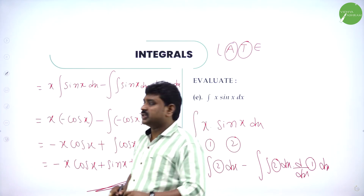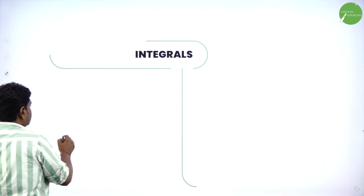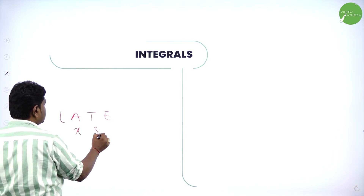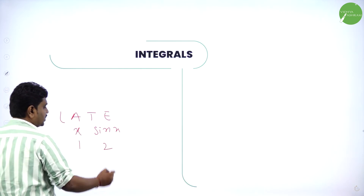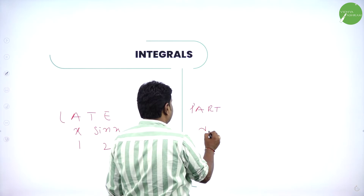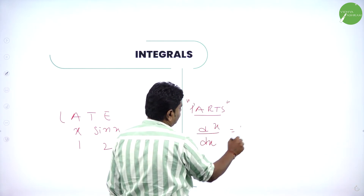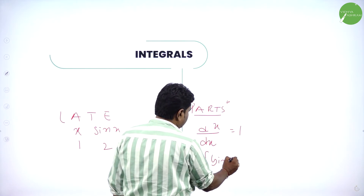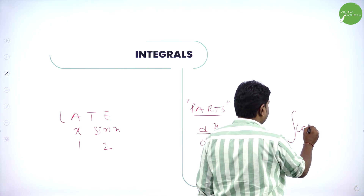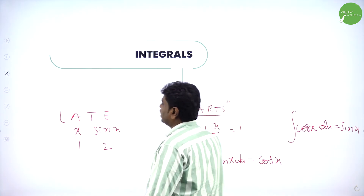We used parts. In this case x is algebra, sin(x) is trigonometry — x was first, sin(x) was second. We used the parts formula. Derivative of x is 1, integration of sin(x) is minus cos(x), and integration of cos(x) is sin(x). Those are the formulas used in solving this problem.